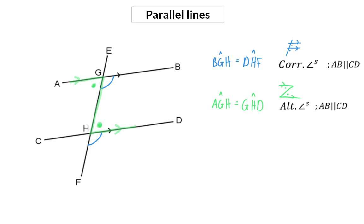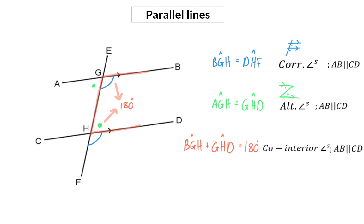Finally, we have a look at co-interior angles. These are two angles that are both on the inside of our two parallel lines. Angle BGH and angle GHD added up will equal 180 degrees. The reason for this will be 'co-interior angles' along with the parallel lines. This time, you're going to look out for a U formed by the parallel lines.